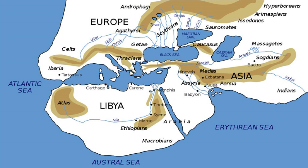Homer is the first to mention Aethiopians. He mentions that they are to be found at the east and west extremities of the world, divided by the sea into Eastern at the sunrise and Western at the sunset. In Rhapsody A of the Iliad, Thetis visits Olympus to meet Zeus, but the meeting is postponed as Zeus and other gods are absent, visiting the land of the Ethiopians. Hesiod speaks of Memnon as the king of Ethiopia.